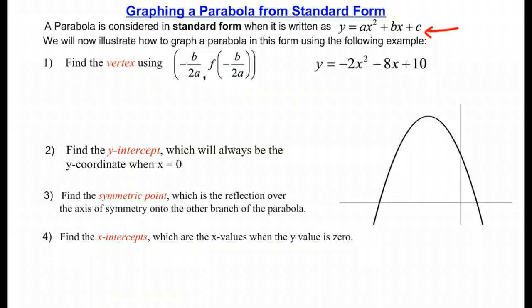To find the vertex, we're going to use this little mini formula right here. This will get us the x-coordinate of our vertex. So I'm going to write negative, and then b, in this case, is this negative 8. So negative of a negative 8, all over twice the value of a, and a is this number right here.